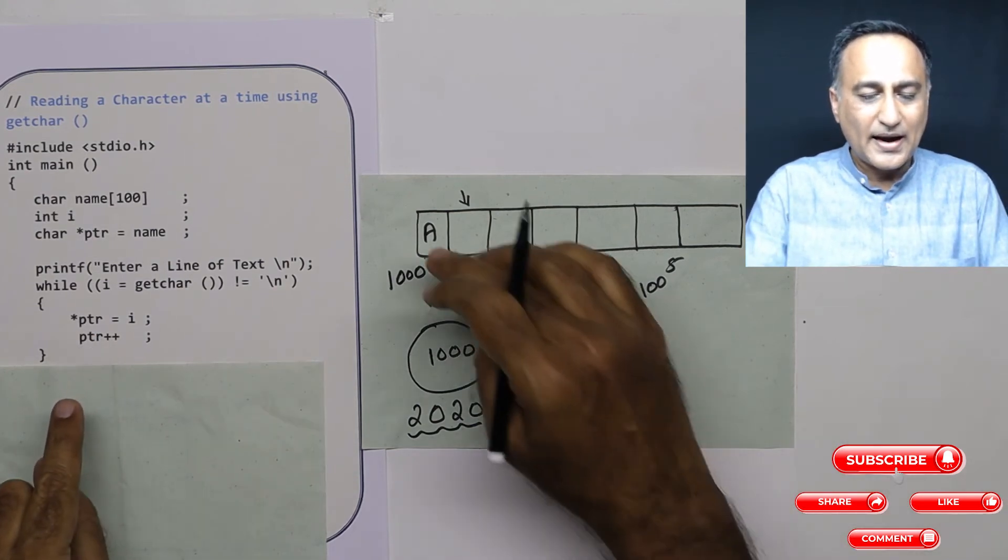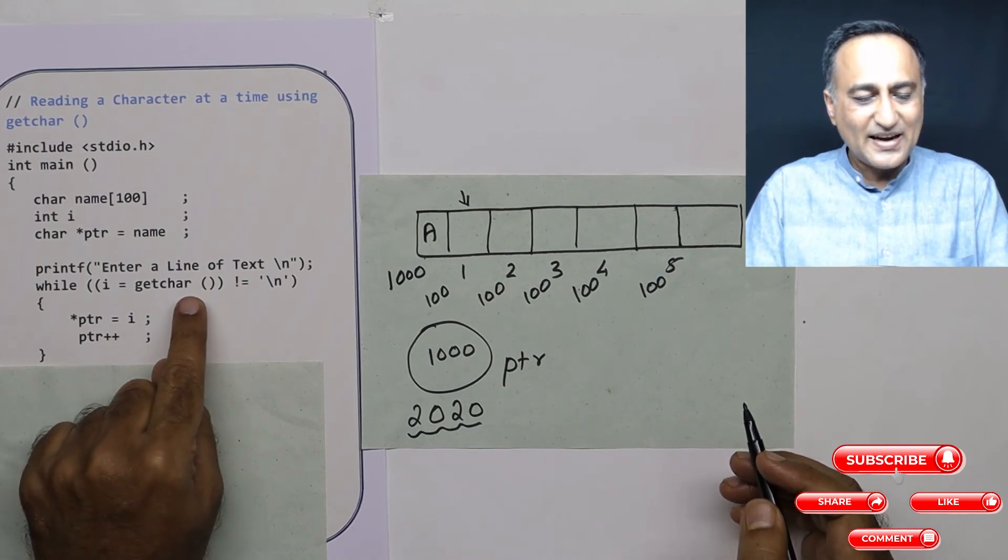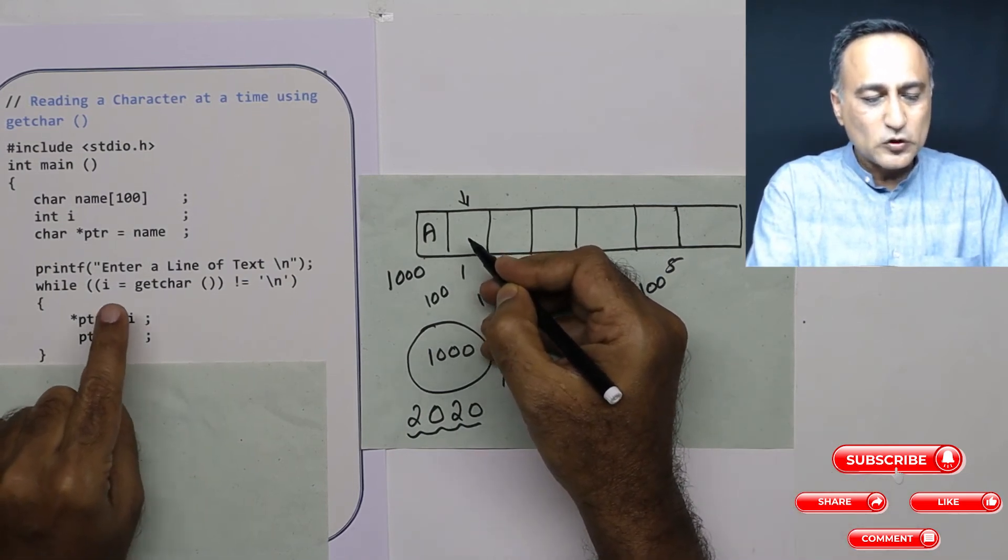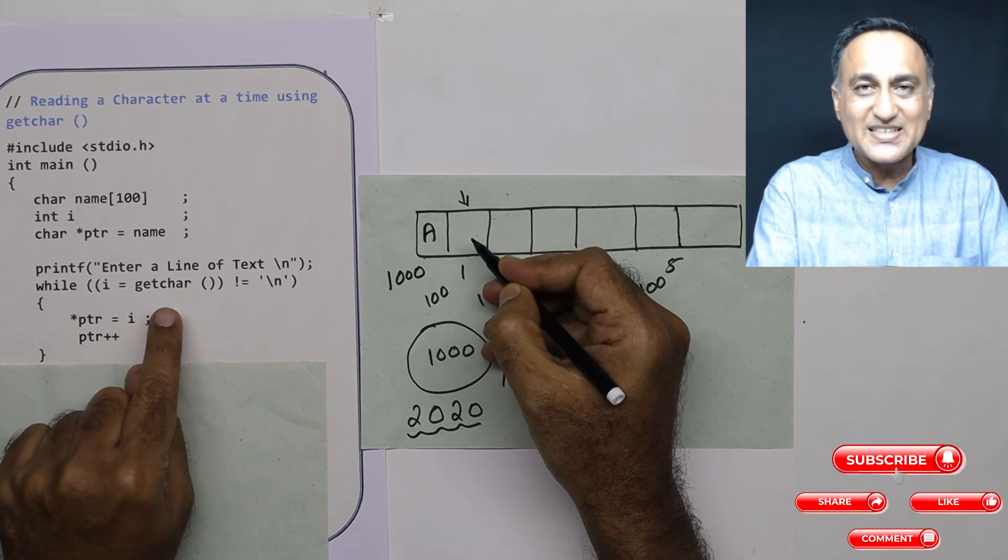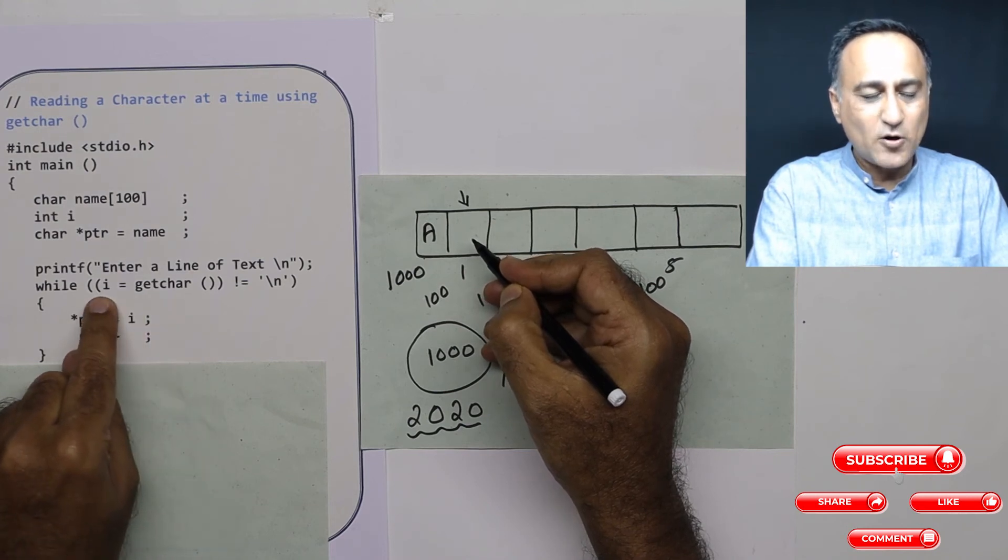So I am going to add A here. Now let's say I enter the next character as capital B. Capital B's ASCII value is 66, so I now becomes 66.